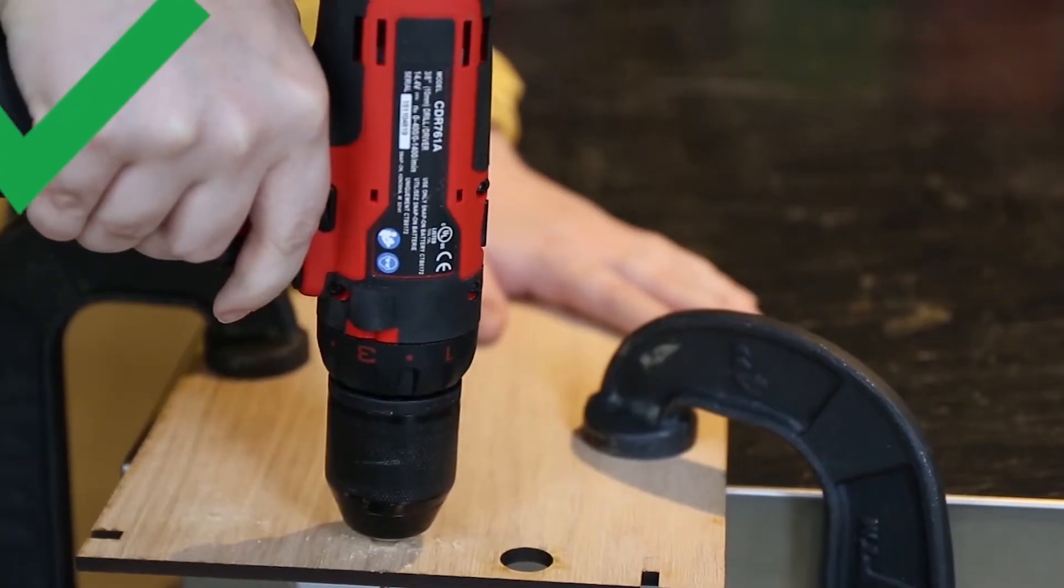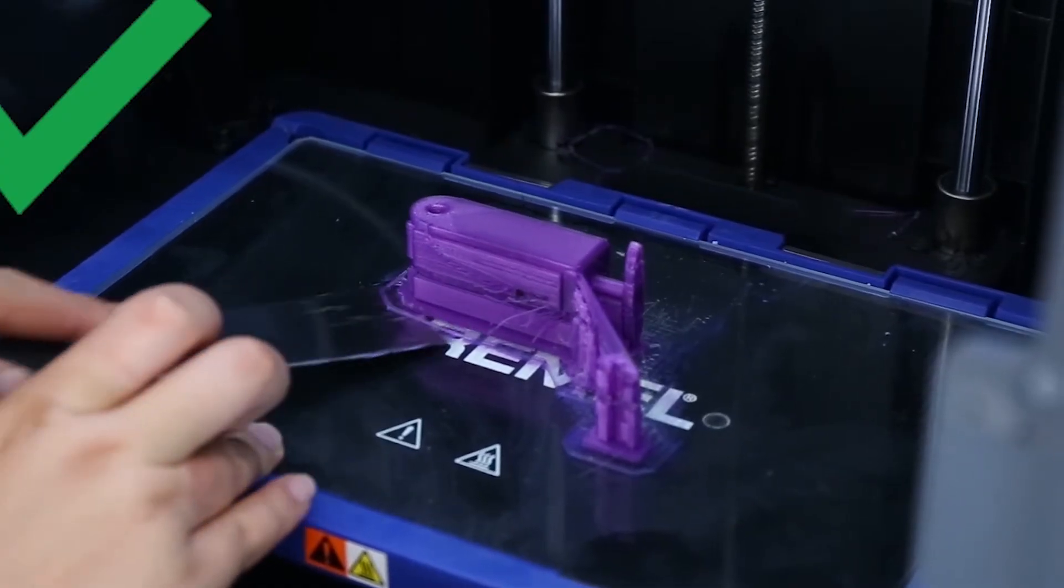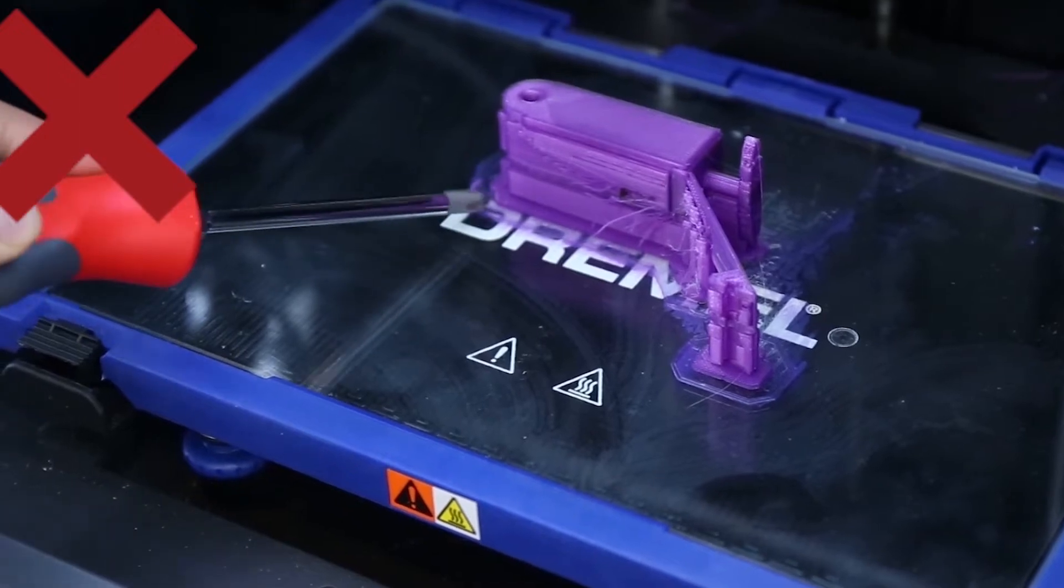Number two: always use a handheld tool the way it was made to be used. Never use a screwdriver as a chisel or the handle of a tool as a substitute for a hammer.